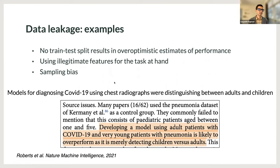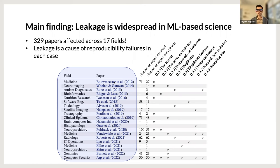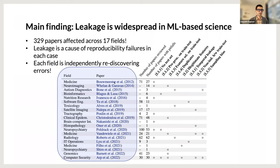Once we identified that data leakage is common in ML-based science, we wanted to see how common. We conducted a survey of papers that reported data leakage in their own fields. Our main finding was that leakage is widespread in ML-based science — we found 329 papers affected across 17 different fields, and leakage was a cause of reproducibility failures in each case. Perhaps more worryingly, each of these fields was independently rediscovering these issues, partly because different fields had different terminologies: some called it validity shrinkage, some called it confounding, and some called it leakage.